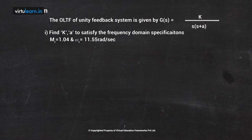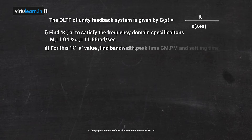The second part of the problem: for this k value, find bandwidth, peak time, gain margin, phase margin, and settling time of the system.